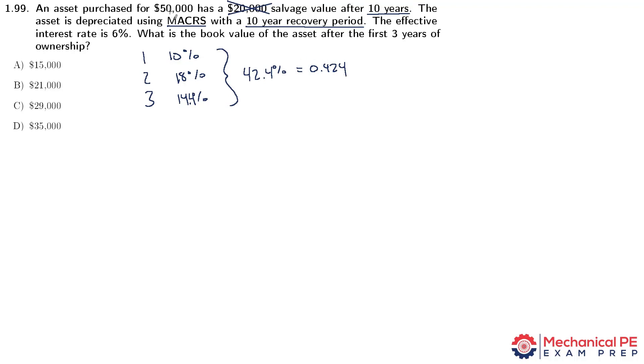Let's multiply that by the initial price. So the depreciation over three years is 0.424 times $50,000, which equals $21,200. That's how much the asset has been depreciated.